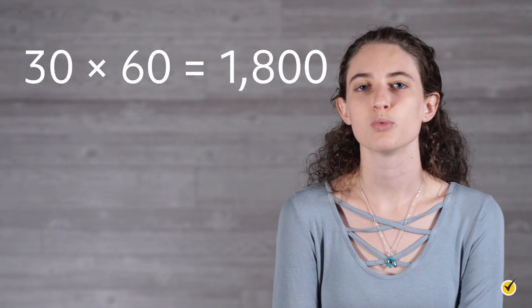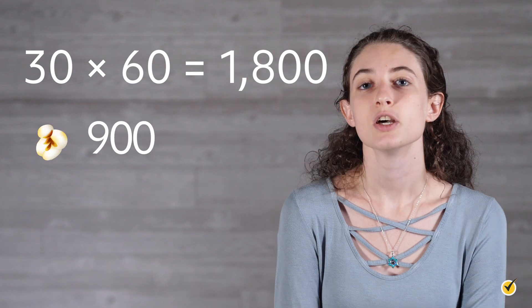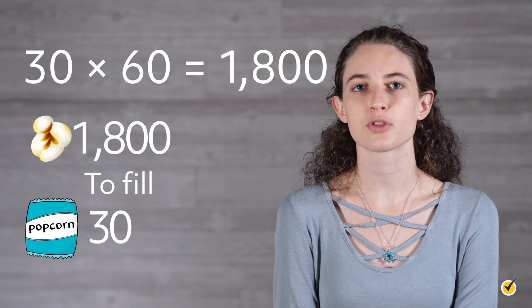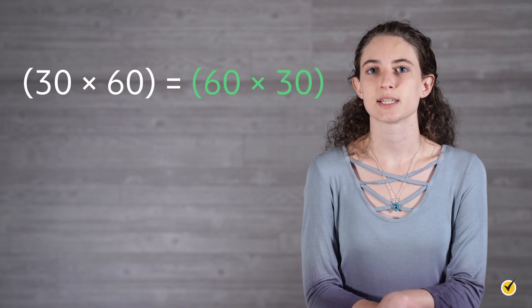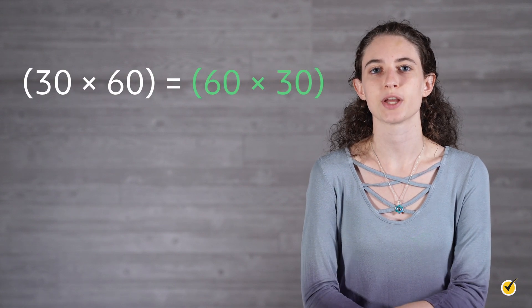30 groups of 60 is written as 30 times 60, which is 1,800. So 1,800 kernels are required to fill up 30 bags of popcorn. Both addition and multiplication are commutative, because the order does not affect the answer. 30 groups of 60 gets us the same result as 60 groups of 30.